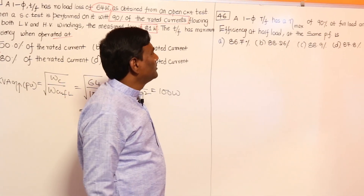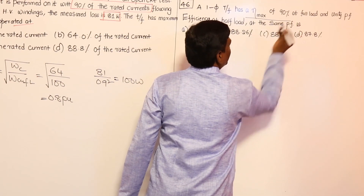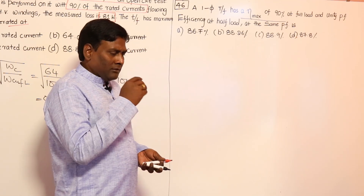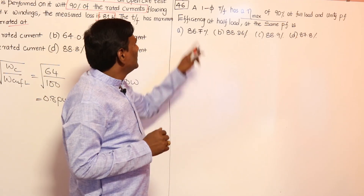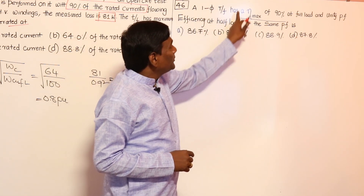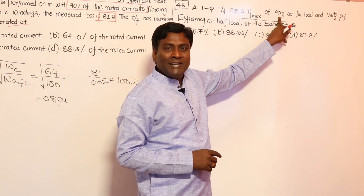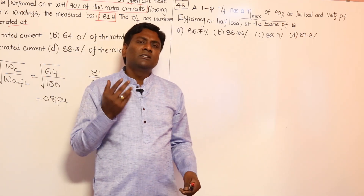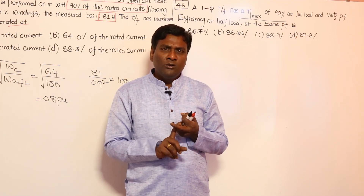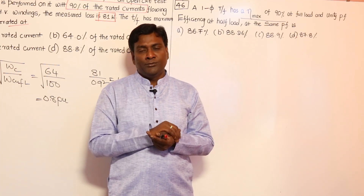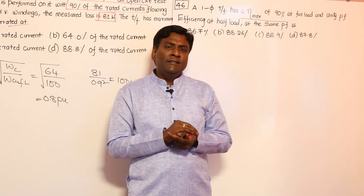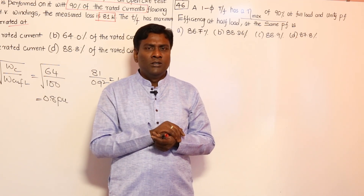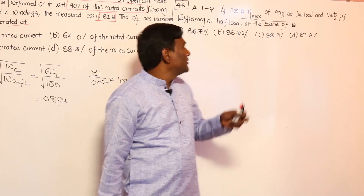Next problem: a single-phase transformer has maximum efficiency of 90% at full load, unity power factor. We also need efficiency at half full load at the same power factor. This is similar to an ISRO exam question. For efficiency calculations, we need to find two unknowns — full load copper loss and core loss — so two operating points are required. If only one point is given, it must be the maximum efficiency point, which provides the extra equation that core loss equals copper loss.